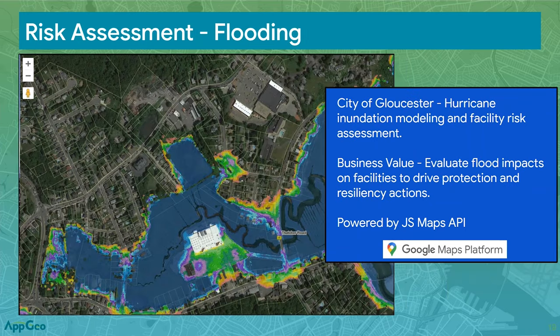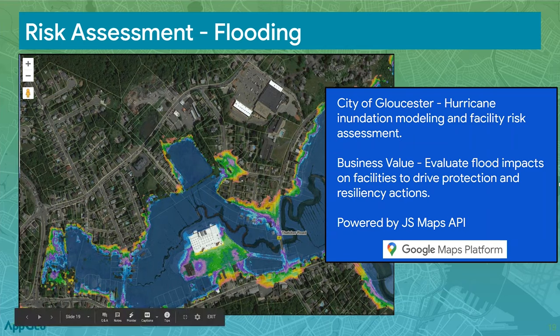Google Maps is a great platform for working with risk assessment from natural disaster scenarios such as flooding. This is a project we did for the city of Gloucester, Massachusetts, looking at hurricane inundation models and mapping those against properties along the shorelines for a facility and property risk assessment. It looked at two flooding scenarios — flood levels — but you could easily handle multiple flooding scenarios and quickly assess what will be affected, driving protection and resiliency actions. This project was powered by the JavaScript Maps API.